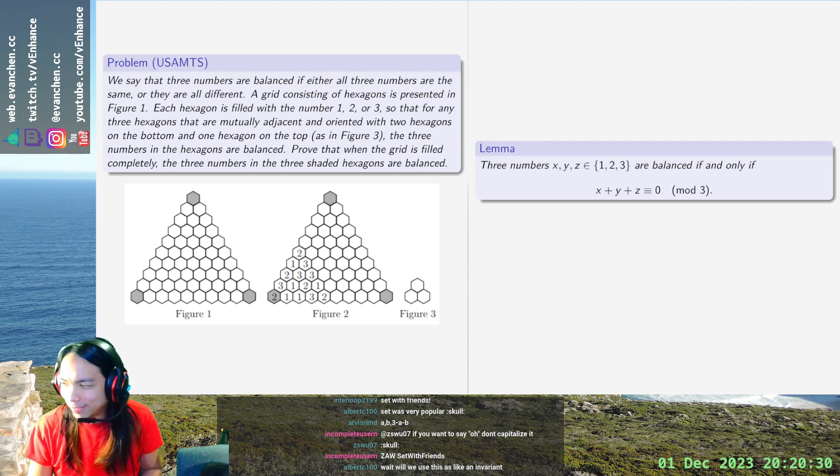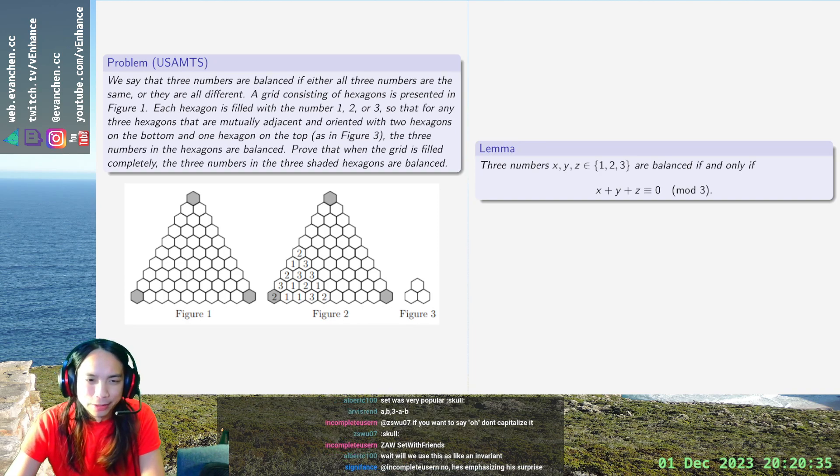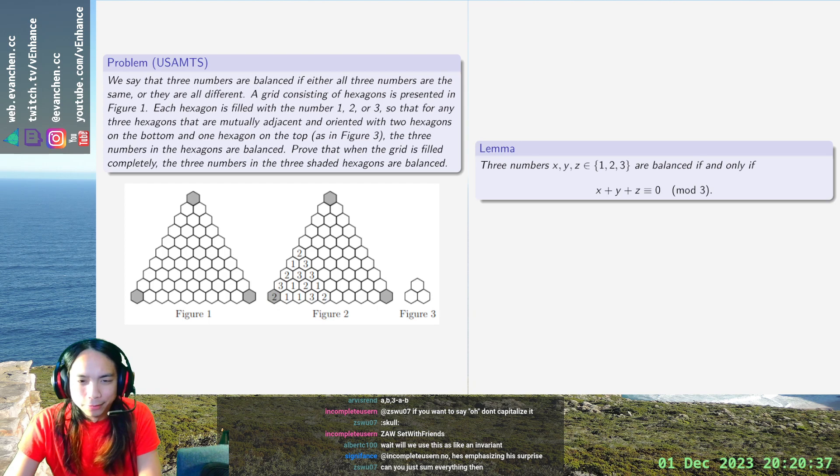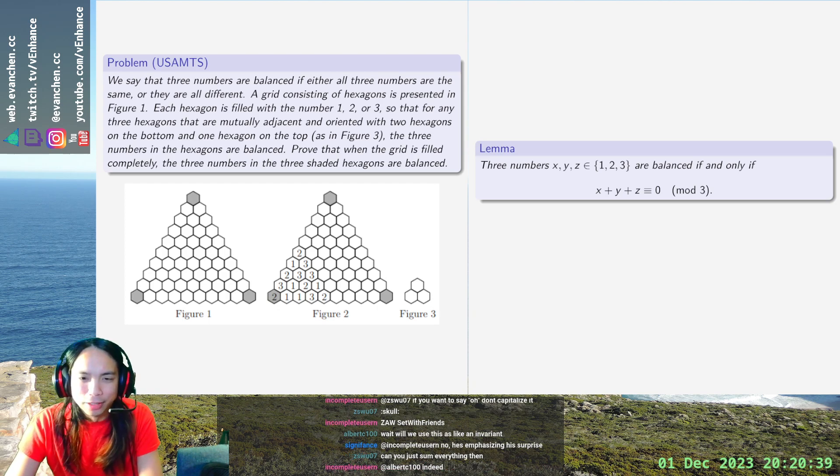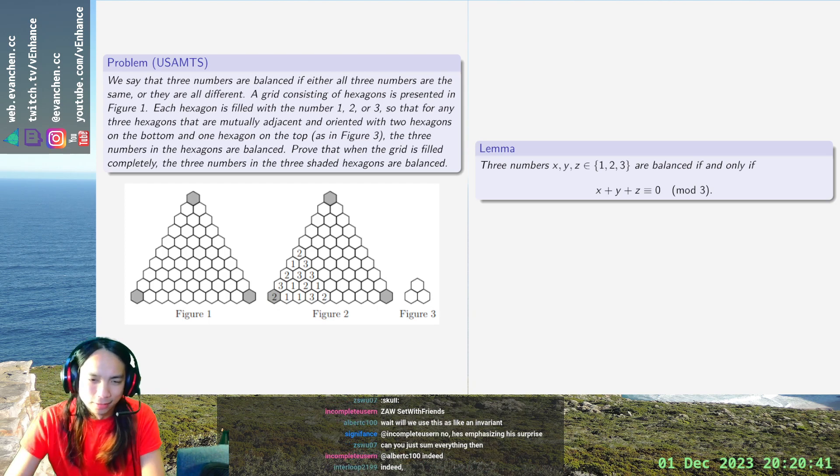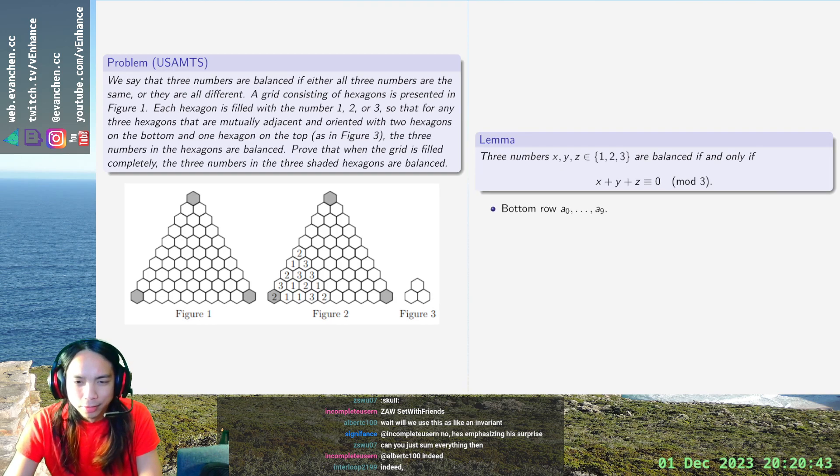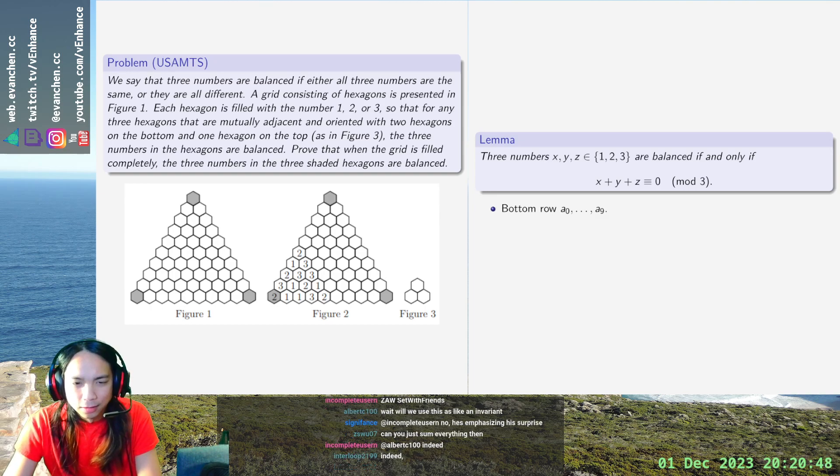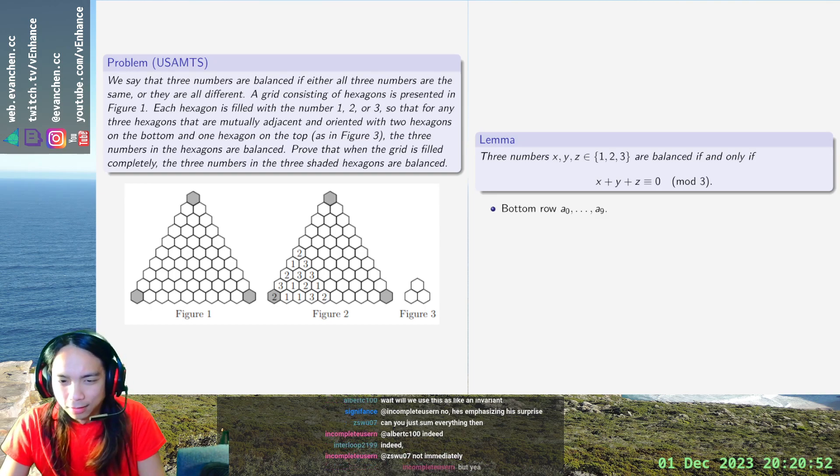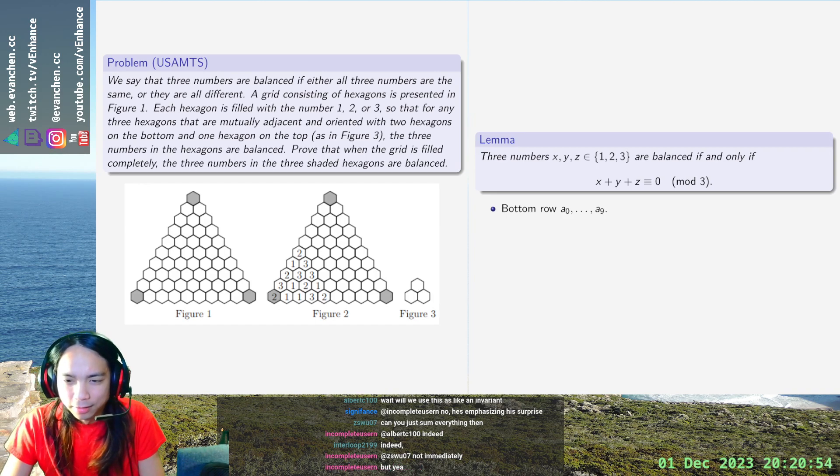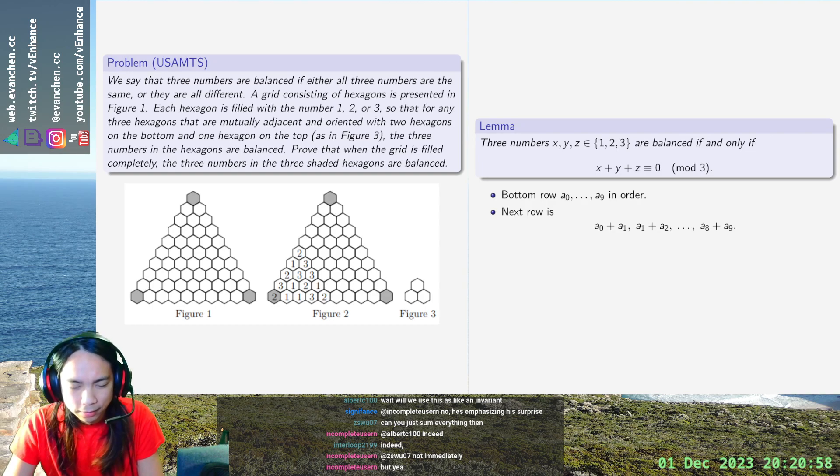So, with that said, let's let the bottom row be a1 through, let's do 0 through 9 just so that, why not, in order. Then, the next row is a0 plus a1, a1 plus a2, ... a8 plus a9, and then the row after that is, oh crap, but I have to actually, okay.